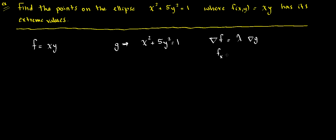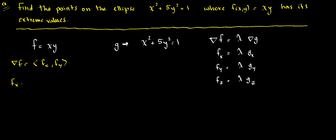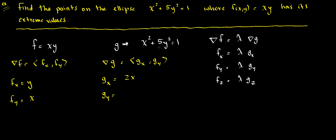This means the partial derivative of f with respect to x equals lambda times the partial derivative of the constraint with respect to x, which is g_x, and f_y equals lambda times g_y. In this case we only have x and y, so we won't need the f_z equation. The gradient of f is the vector (f_x, f_y): f_x, the partial derivative with respect to x, gives y; f_y, differentiated with respect to y, gives x. The gradient of the constraint is the vector (g_x, g_y): g_x gives 2x, and g_y gives 10y.